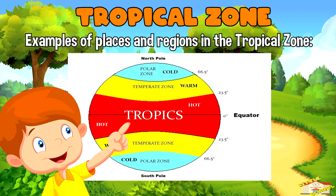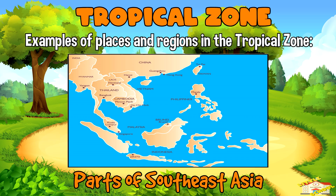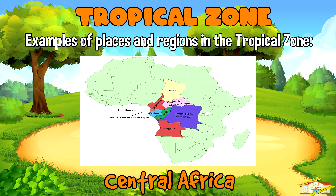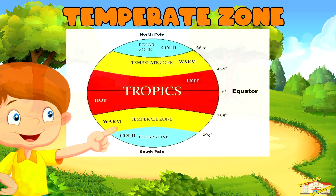Examples of places and regions in the tropical zone are the Amazon rainforest, parts of Southeast Asia, and Central Africa.